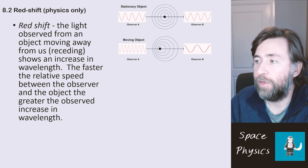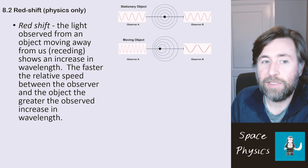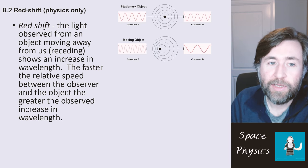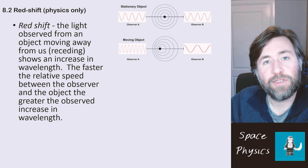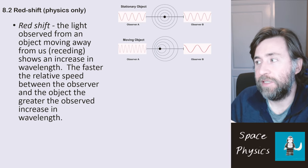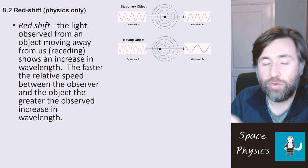However, with the second one, the one below that, the moving object, you can see it is moving towards the left. And that means that every time it emits a wave, it's a bit closer to the previous wave that it emitted. So that actually is an observed shorter wavelength.